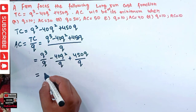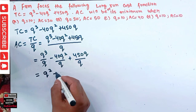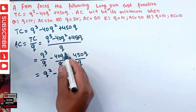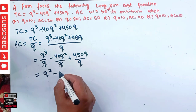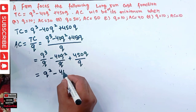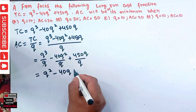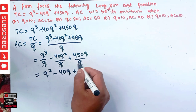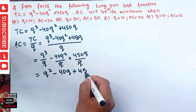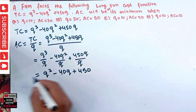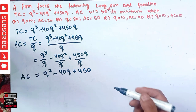Simplifying each term: Q cubed over Q leaves Q squared; 40Q squared over Q leaves 40Q; and 450Q over Q leaves 450. So our average cost function is AC equals Q squared minus 40Q plus 450.